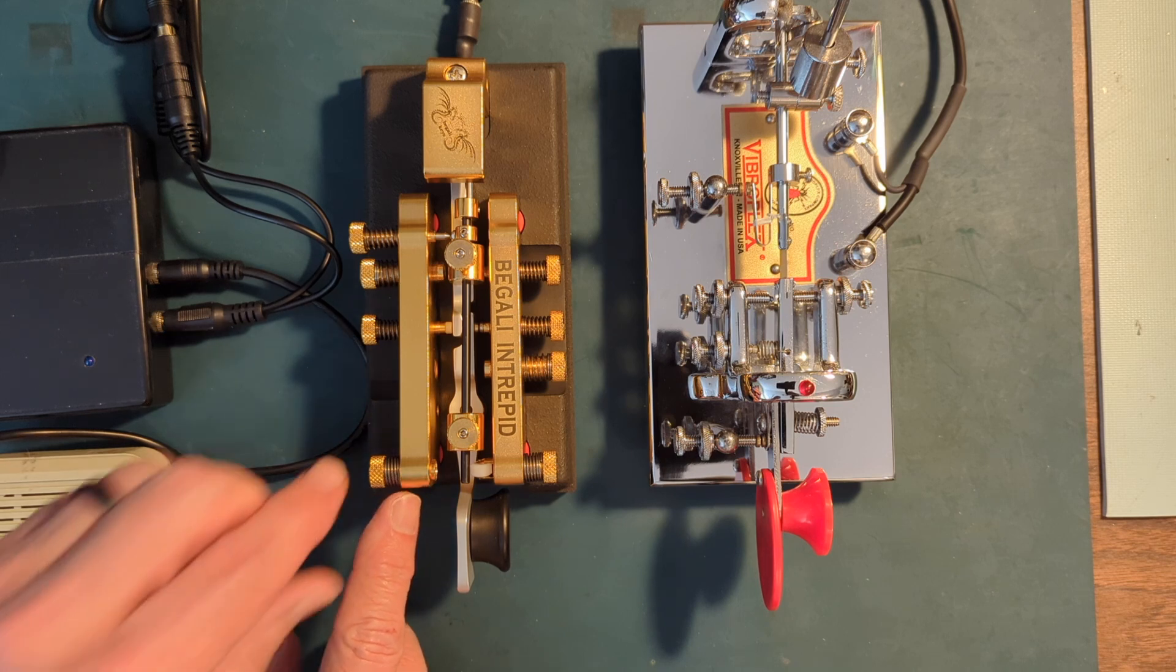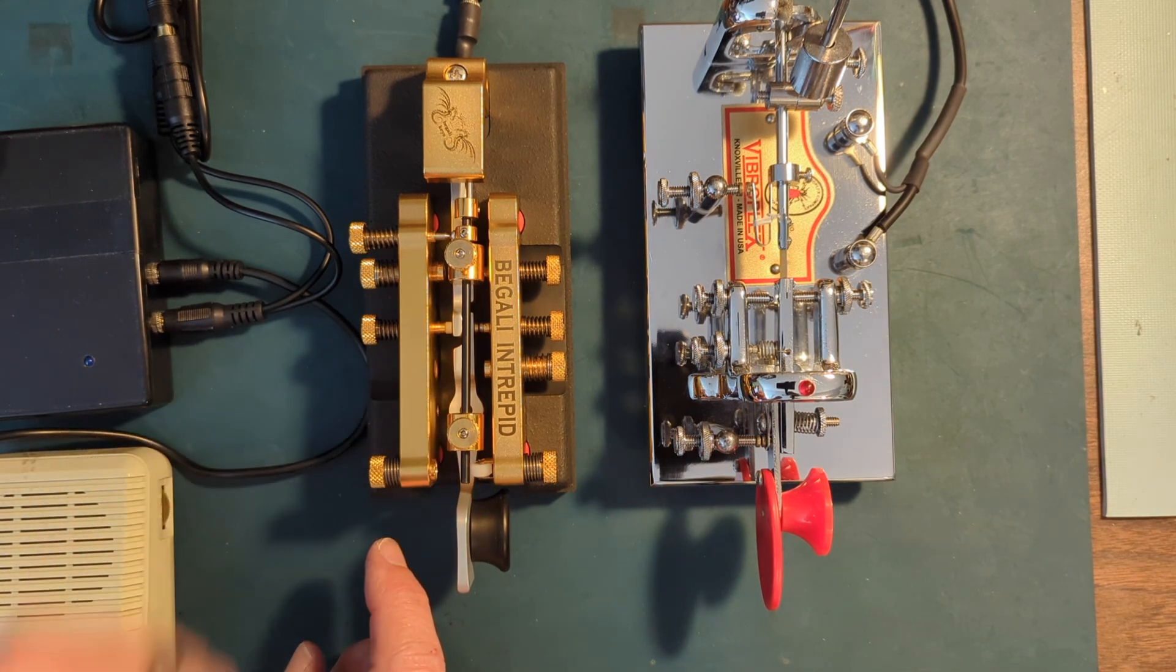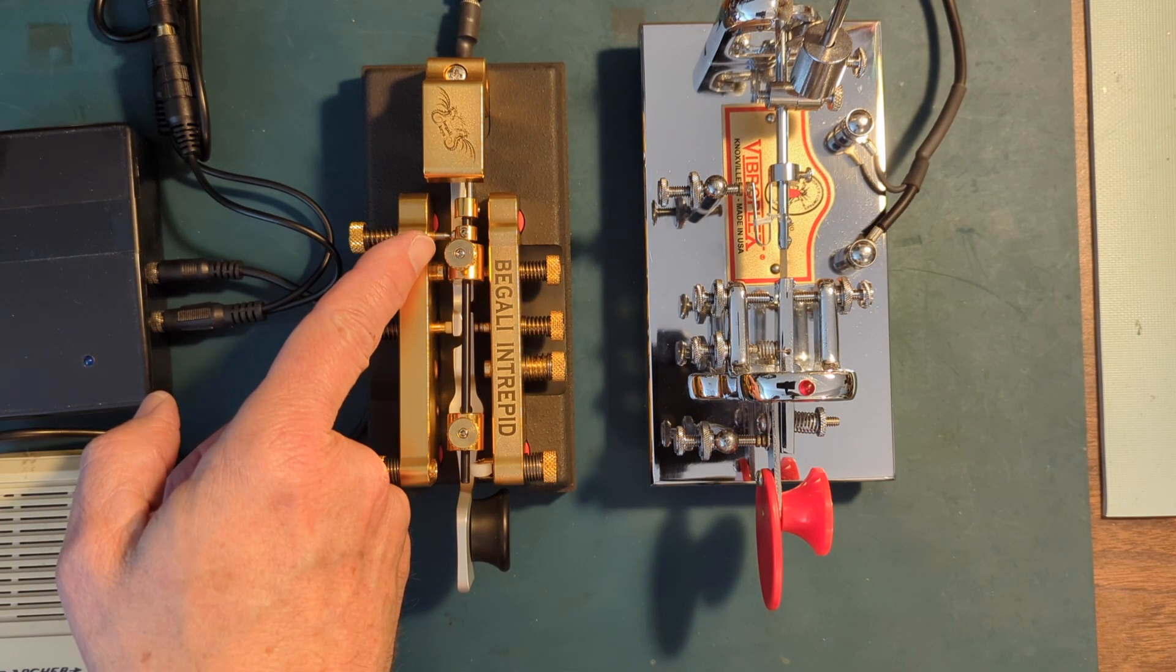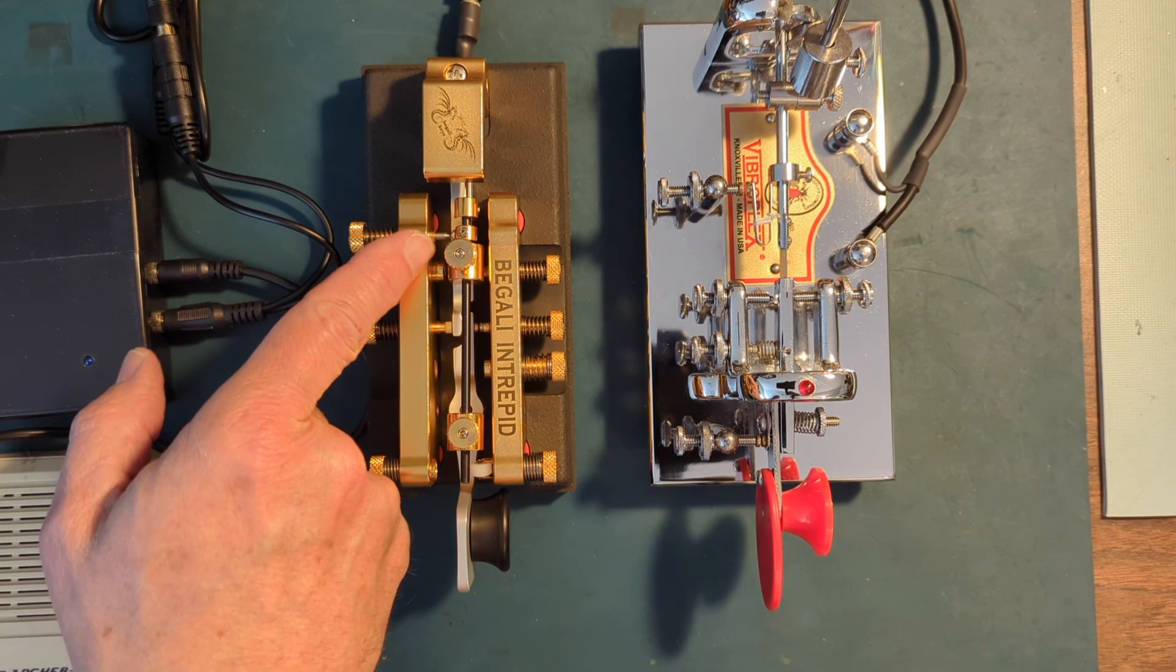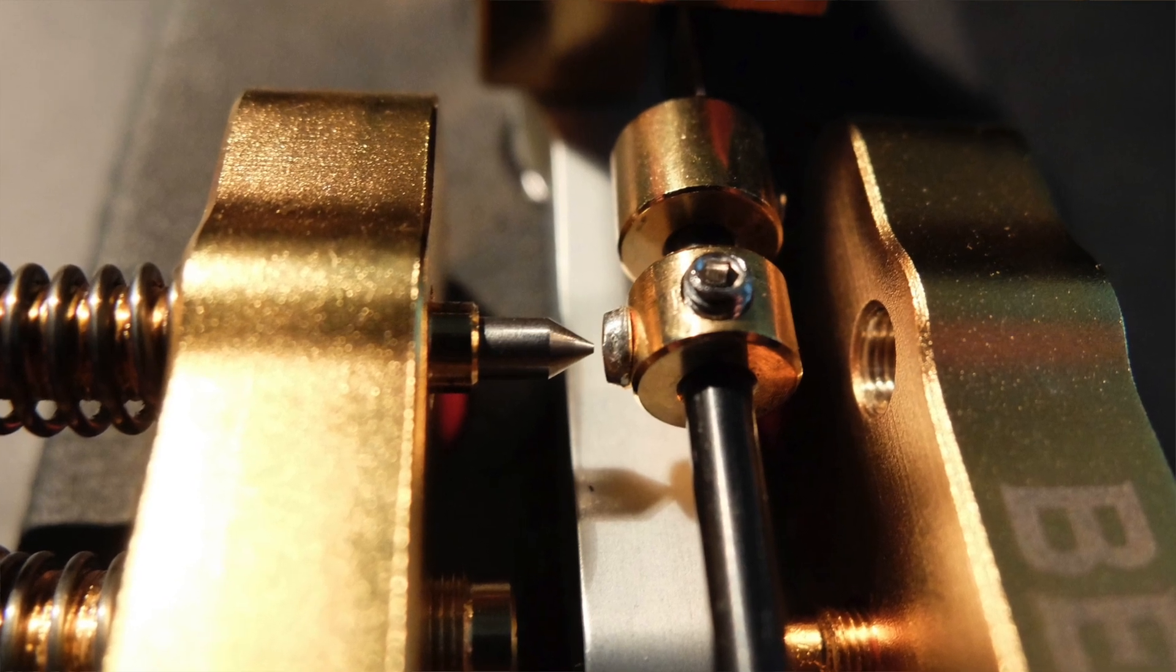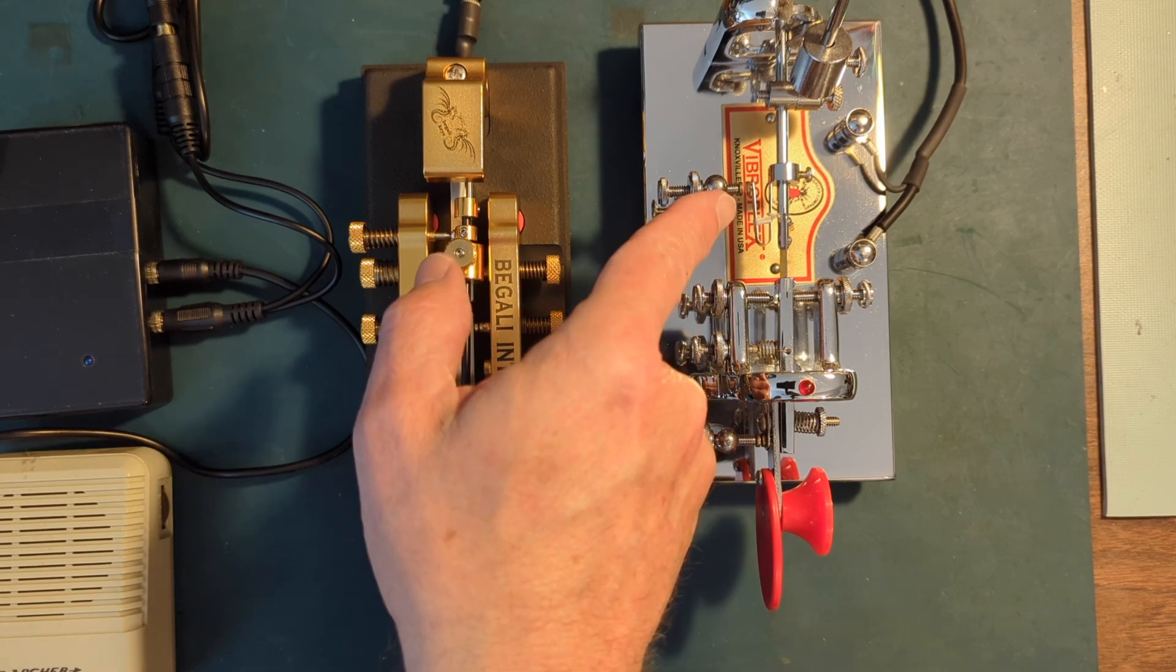So on the Pagali, there is a magnet here that pulls against the pendulum, the end of the pendulum, and it controls how much time it dwells on the pin. So again, DIT contacts are made with this little pin plunger on the Pagali Intrepid, whereas the DIT contacts are made with the U-spring here.